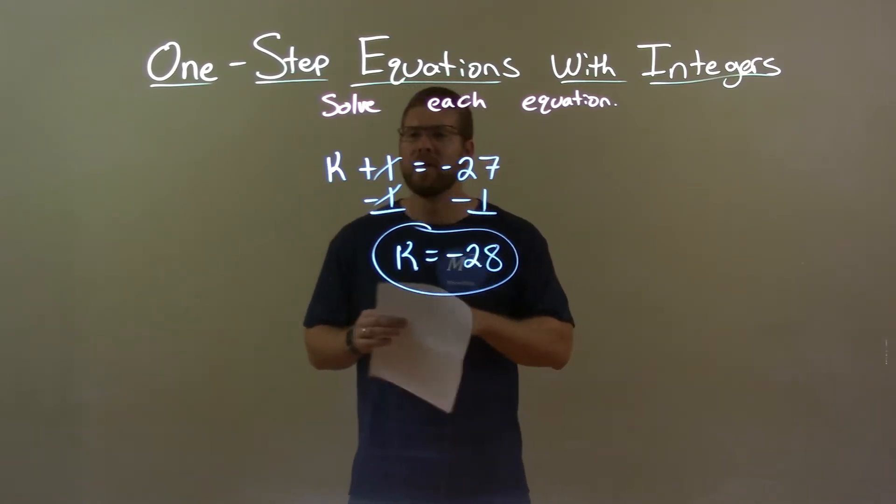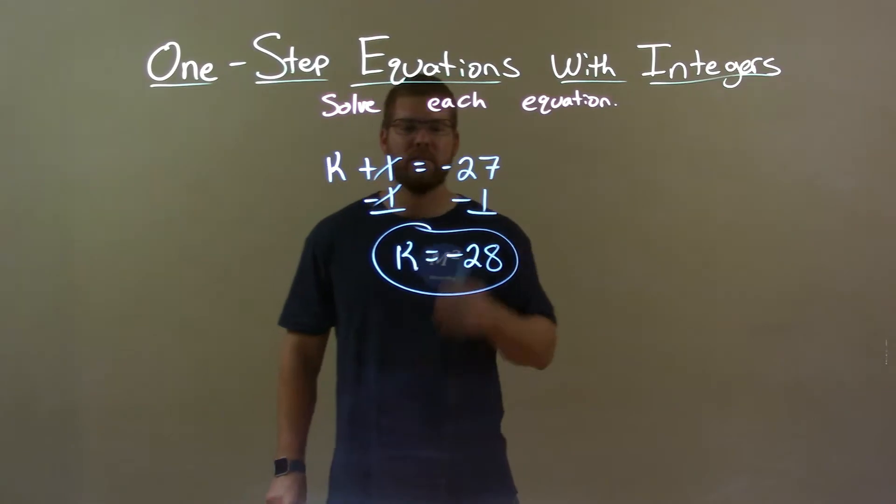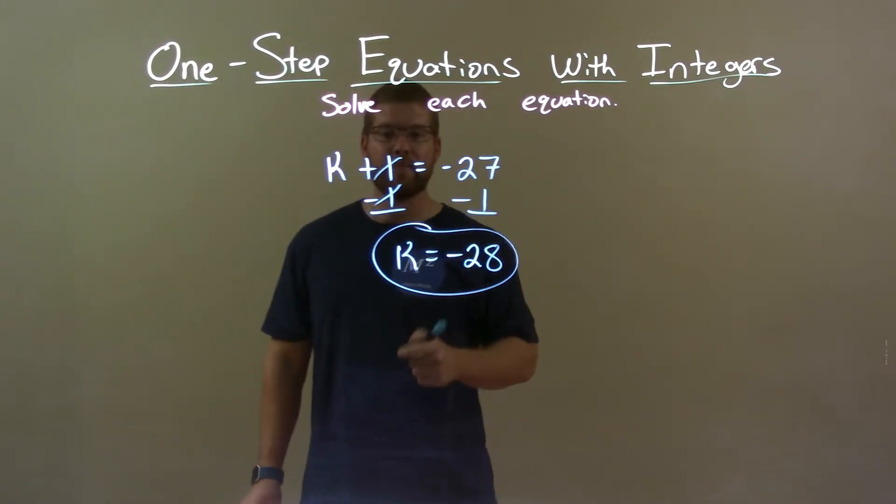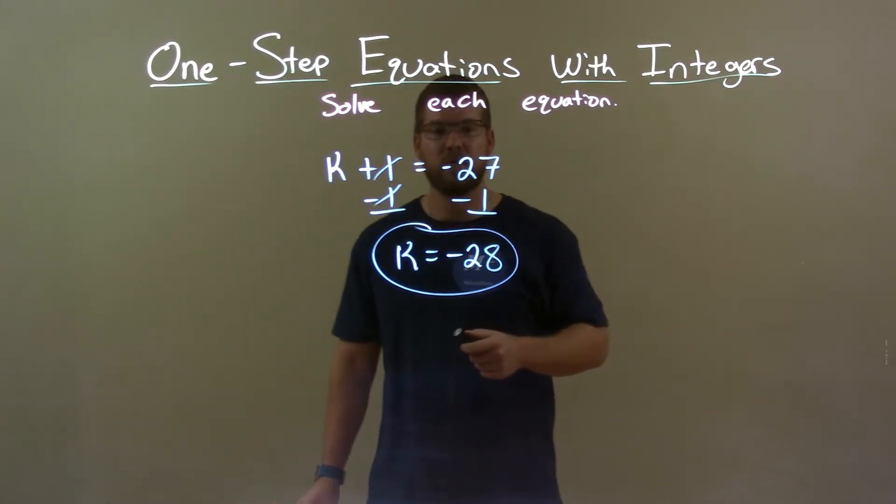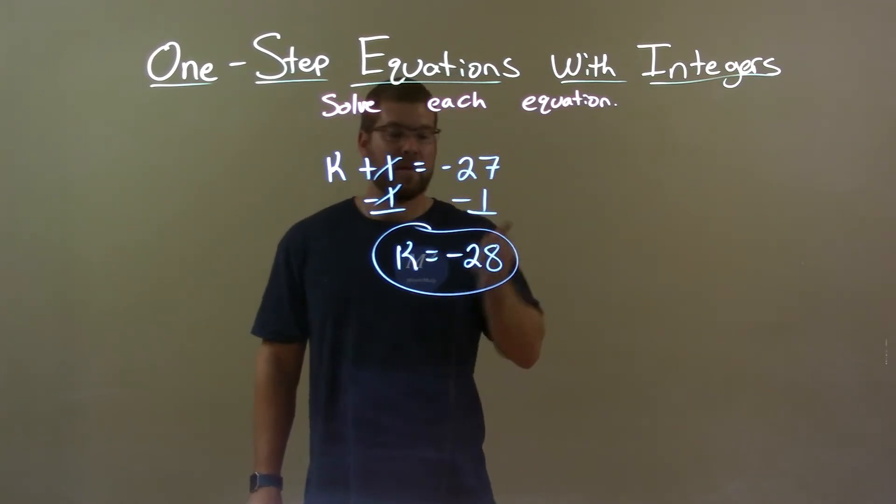Quick recap, we're given k plus 1 equals negative 27 and we have to solve for k. I subtract 1 from both sides giving me k by itself. Negative 27 minus 1 is negative 28. So again, final answer, k equals negative 28.